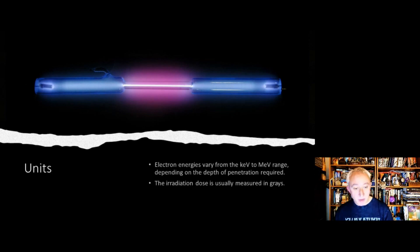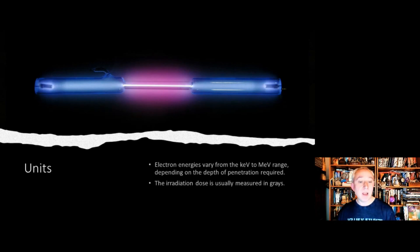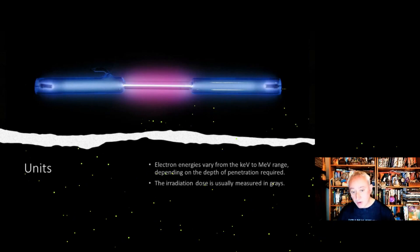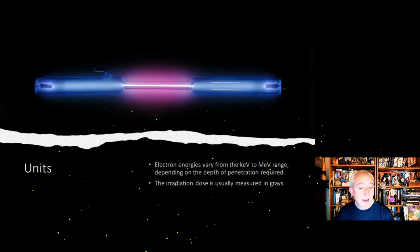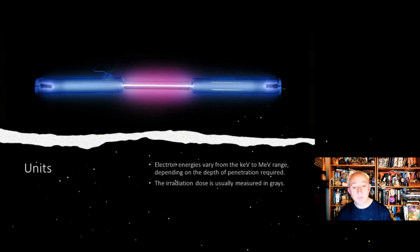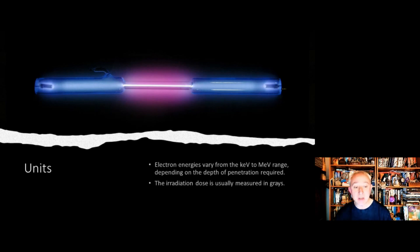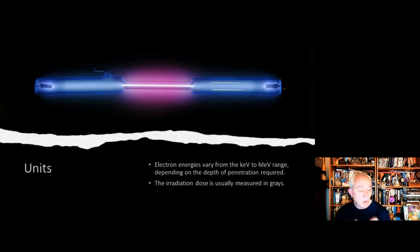There are some important concepts to consider, particularly in terms of units and measurements. Electron energies typically vary and are in the keV to MeV range, depending upon the depth of penetration required. eV refers to electron volt, the standard unit of measurement in electrostatic particle accelerator sciences. An electron volt is the amount of kinetic energy gained or lost by a single electron accelerating from rest through an electric potential difference of one volt in a vacuum.